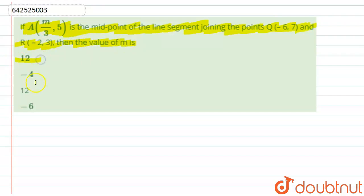First option is -12, second is -4, third is +12, fourth is -6. Actually the first option is given to us, that is -12. So let us start with the solution.